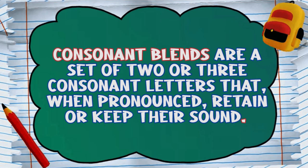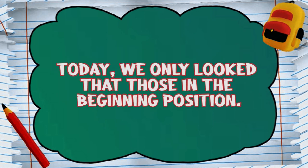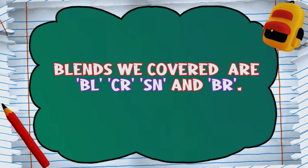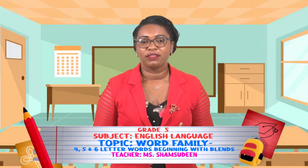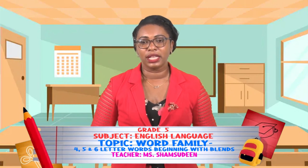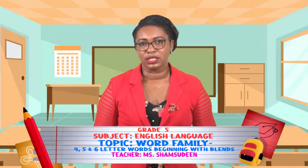There we have it, boys and girls — you have come to the end of our trip down the blends lane. Remember, consonant blends are a set of two or three consonant letters that when pronounced, they retain or keep their sound. Blends are found either at the beginning or the end and can be used to form short or long words, but today we only looked at those in the beginning position. The blends we covered are BL, CR, SN, and BR. I hope you remember that you have additional words with four, five, and six letters to find for each blend family. That's all for now — continue to have fun while learning and stay as safe as possible. I am, as always, Misham Shadeen. See you later.